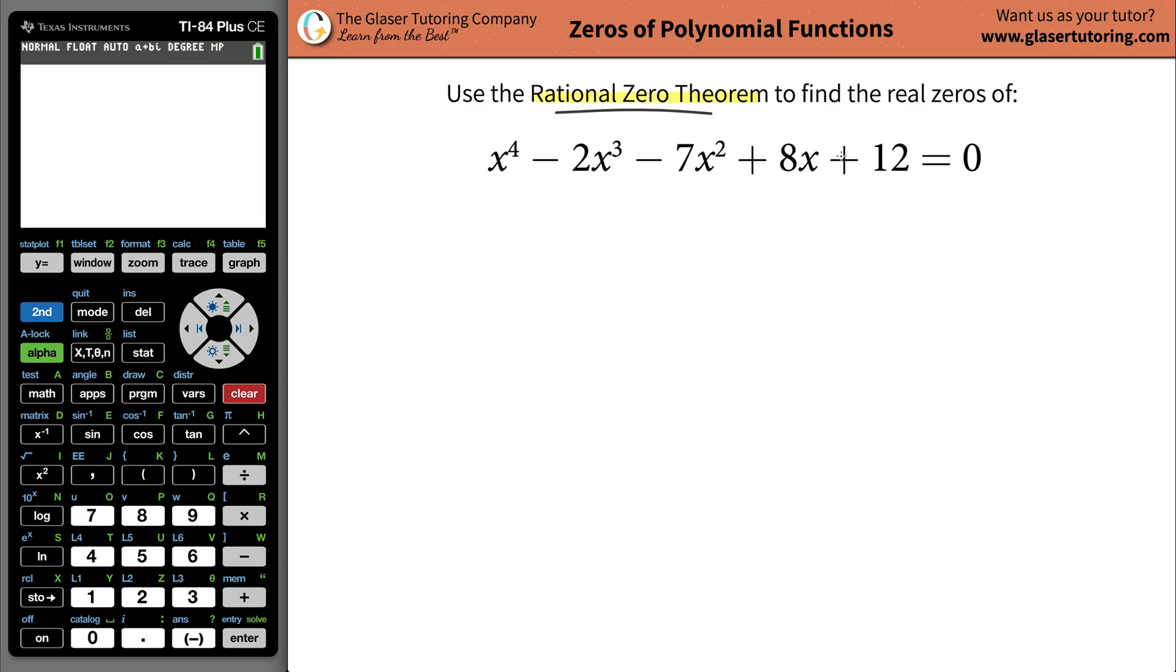So what in the world is the rational zero theorem? Well, basically it says this: if you find the factors of your constant term in the polynomial function and you call those factors p, traditionally it's called p, and then you take the factors of the leading coefficient, which is the coefficient in front of the highest power of x in your polynomial function, which in this case is a one, and you call those factors q.